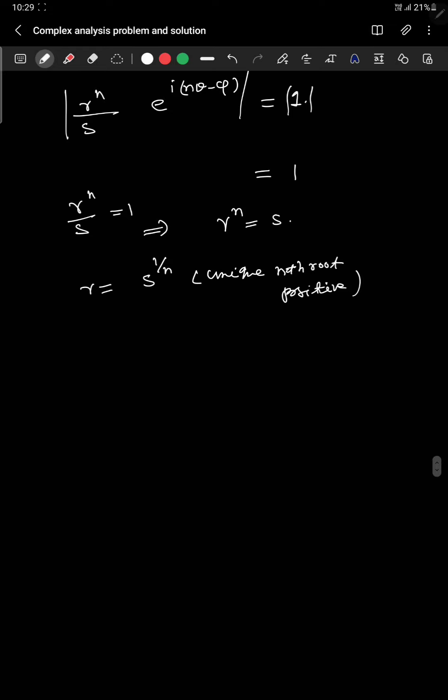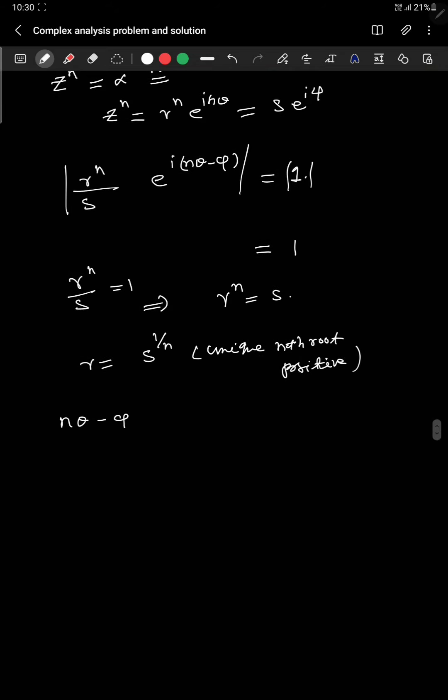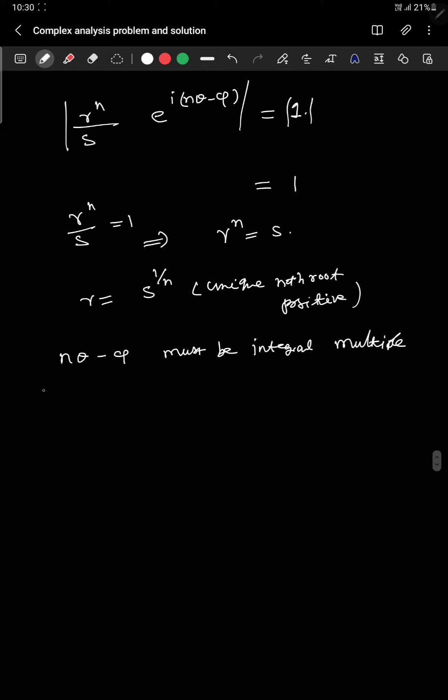So finally what happens is we got a unique r and nθ - φ. After that when you do this thing, you can cancel out and see that nθ - φ must be integral, I mean integral in the sense of multiple. I am saying that it is an integer multiple of 2π.